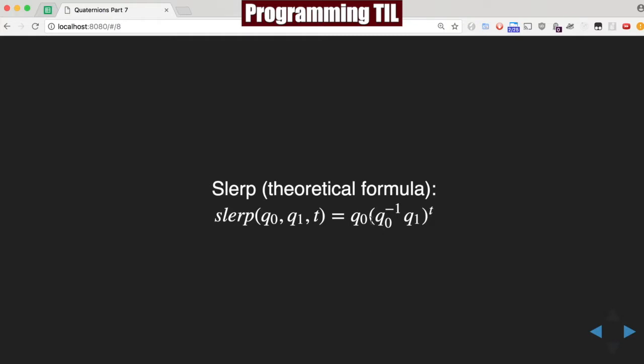So here's the theoretical formula. We have the SLURP of q0, q1, t is equal to q0 times the inverse of q0, q1, to some power t.